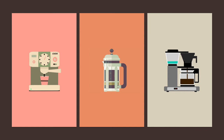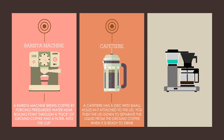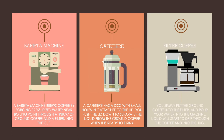Common equipment used. Barista machine: a barista machine brews coffee by forcing pressurized water near boiling point through a puck of ground coffee and a filter into the cup. Cafetière: a cafetière has a disc with small holes in it attached to the lid; you push the lid down to separate the liquid from the ground coffee when it is ready to drink. Filter coffee: you put the ground coffee into the filter and pour your water into the machine, and the liquid will start to drip through the coffee and into the jug.